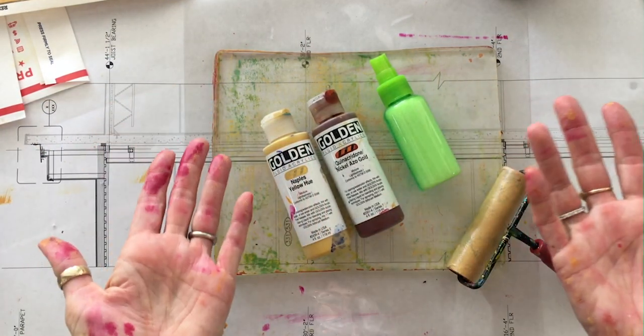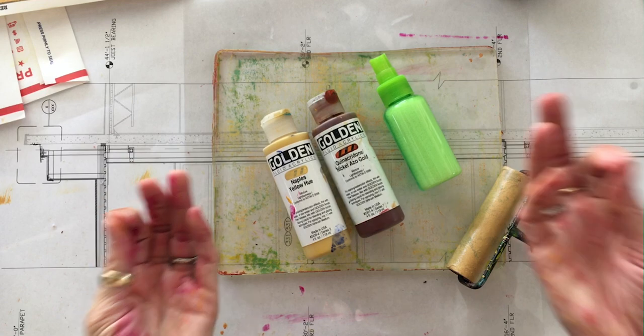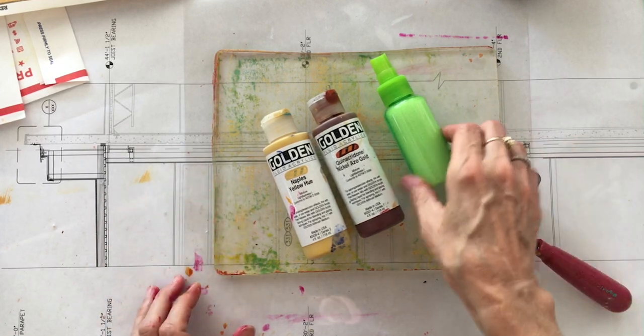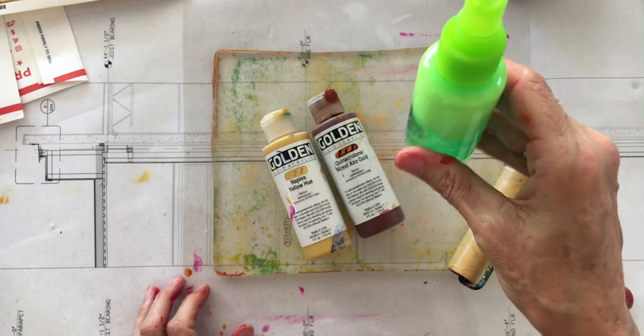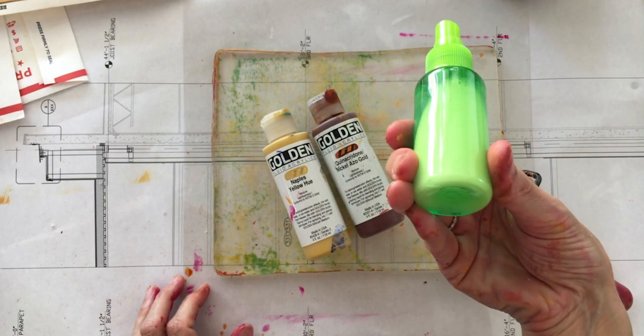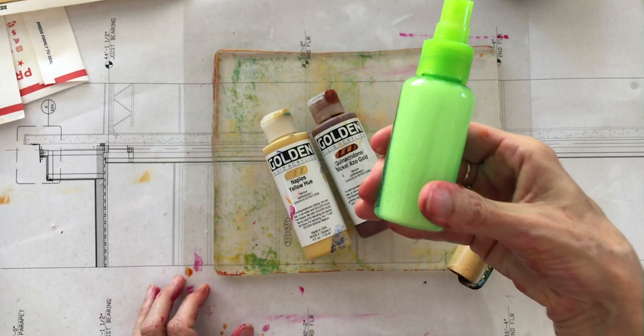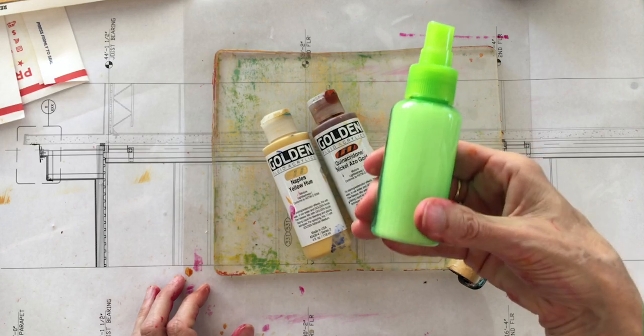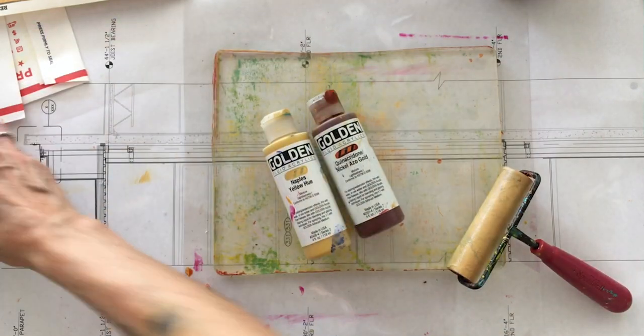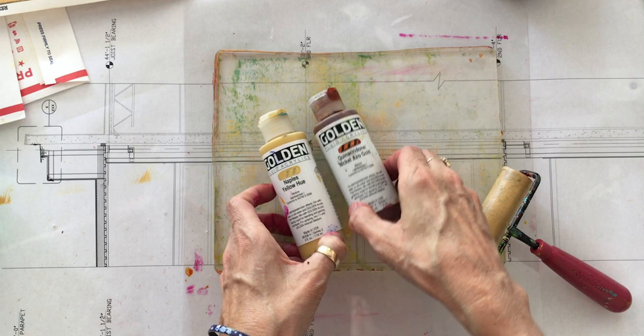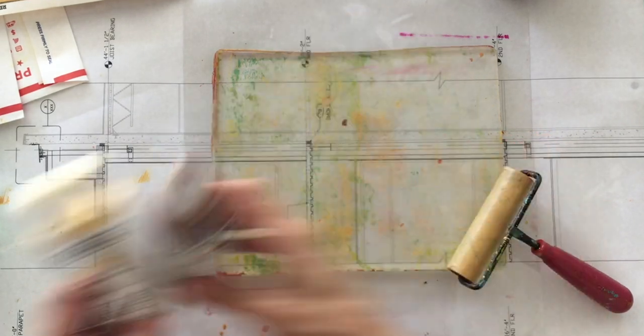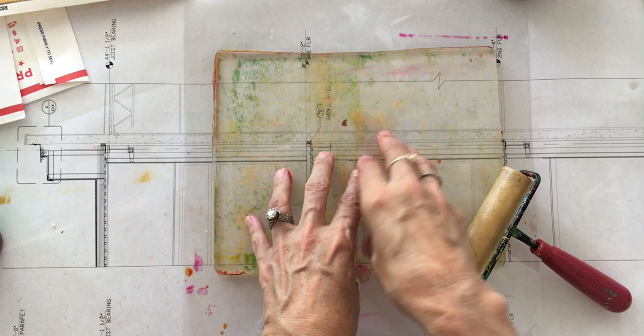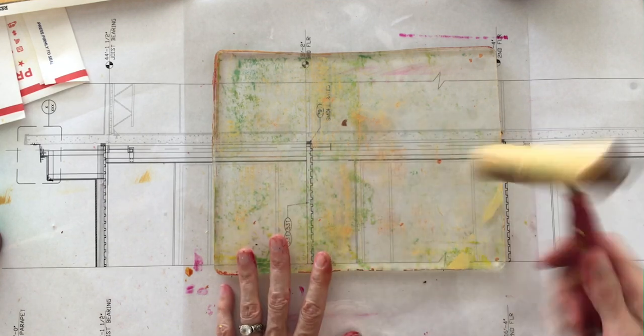Welcome back. Today I'm going to demonstrate the soap bubble spray resist. I've got a soap spray atomizer that I got on Amazon. It's a little travel spray container. I've filled it with water and one tablespoon of Dawn dish liquid. I've got golden fluid acrylics in quinacridone nickel ozo gold and naples yellow, my gel press gel monoprinting plate, and a brayer.